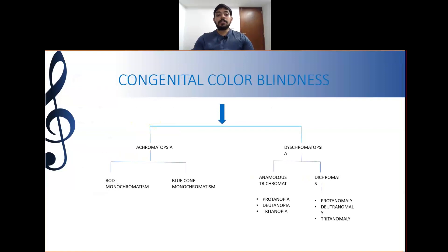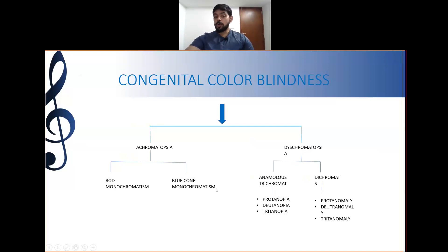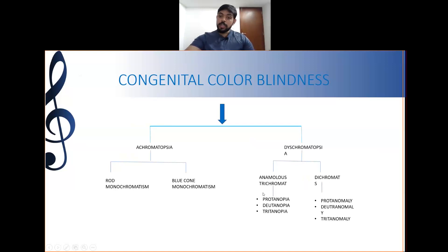Congenital color blindness includes achromatopsia, rod monochromatism, and cone monochromatism. Dichromatopsia is divided into protanopia, deuteranopia, and tritanopia. Anomalous trichromacy includes protanomaly, deuteranomaly, and tritanomaly.